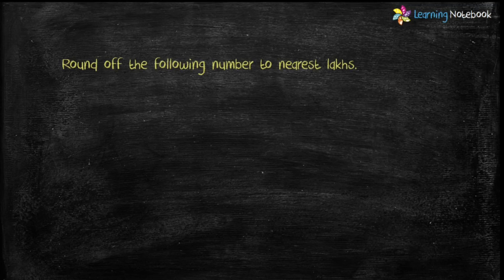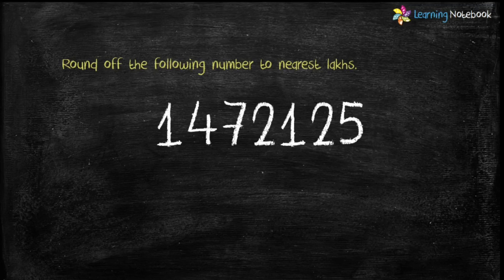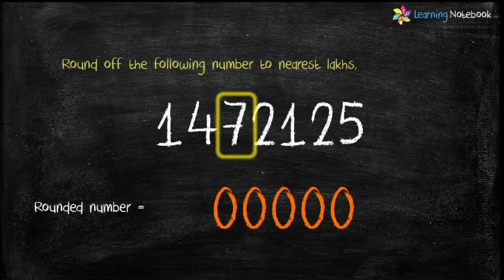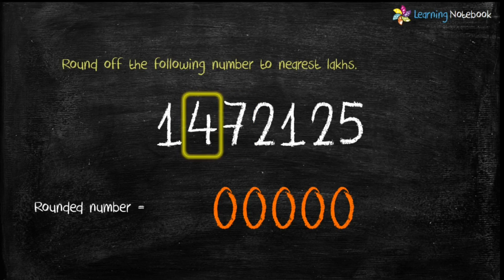Let's see one more example: round off 1,47,21,25 to the nearest lakh. Here the ten-thousands digit is 7, which is greater than 5. So first replace 72125 by 0, then increase the lakhs digit, which is 4, by 1 — 4 plus 1 equals 5. Keep the remaining digit as it is. Therefore the rounded number is 15 lakhs.